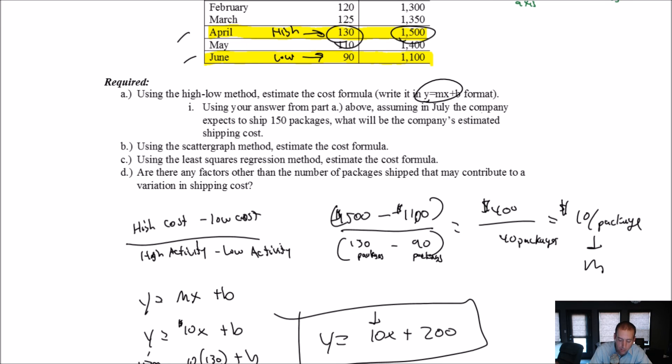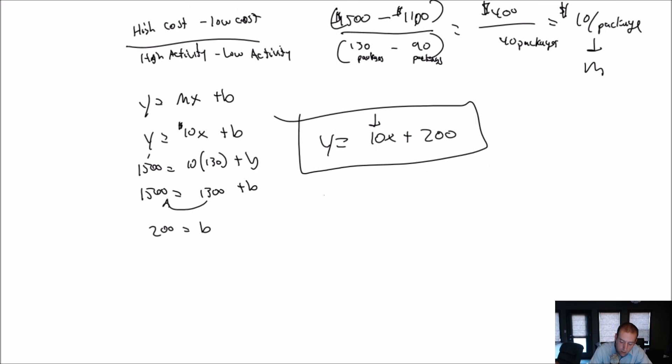It says, assuming in July, the company expects to ship 150 packages, what's the shipping cost going to be? Well, if in July, I think I'm going to ship 150 packages, I just go Y equals 10. X is the activity level. So X is 150 plus 200. 10 times 150, $1,500 plus 200.